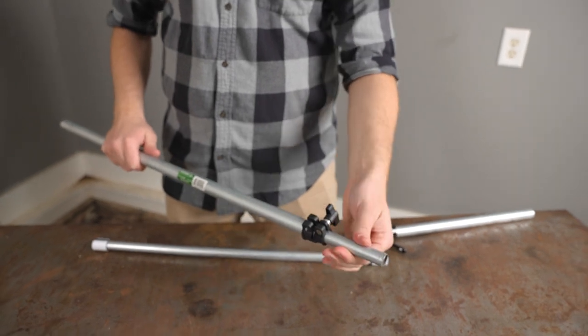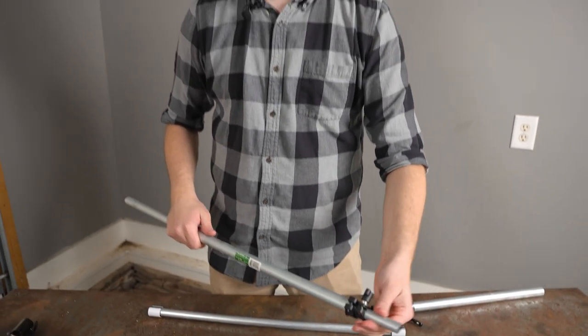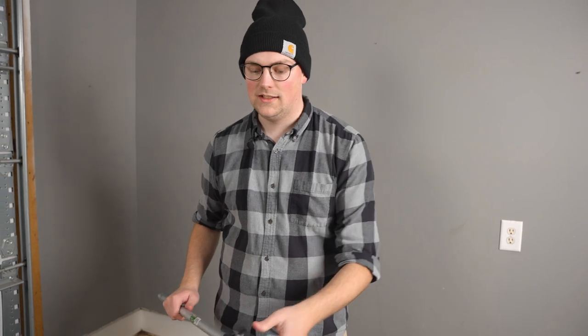You loosen it in order to telescope the half-inch EMT inside the three-quarter inch. Recently we accidentally discovered a telescoping clamp that I think is a better solution and allows you to do some pretty cool stuff.